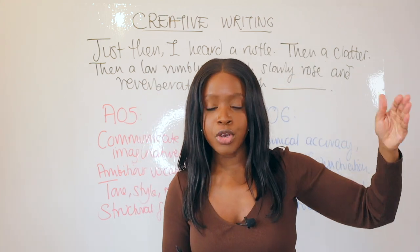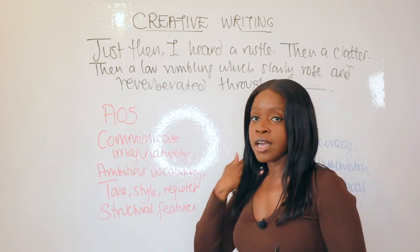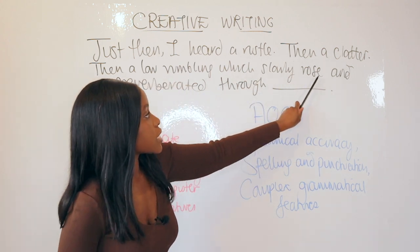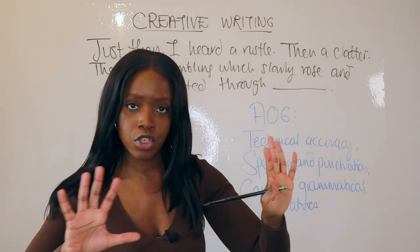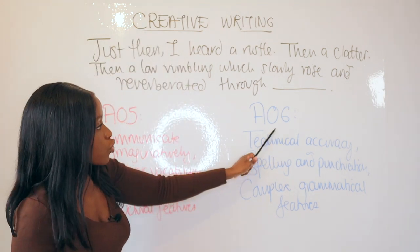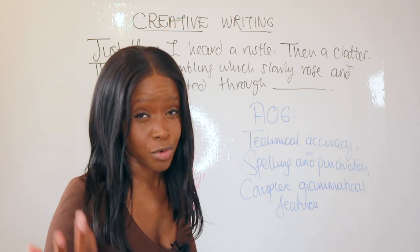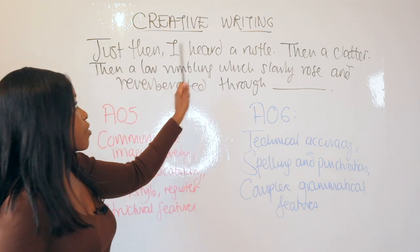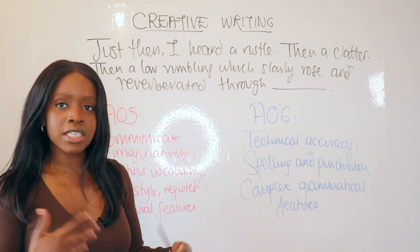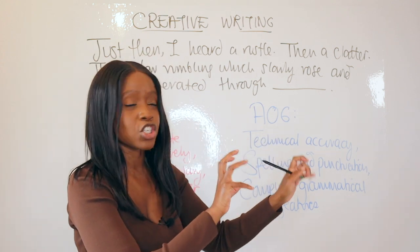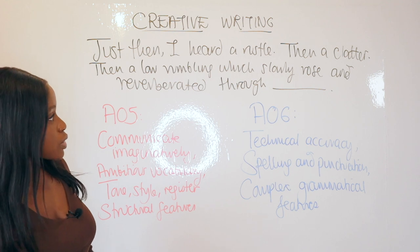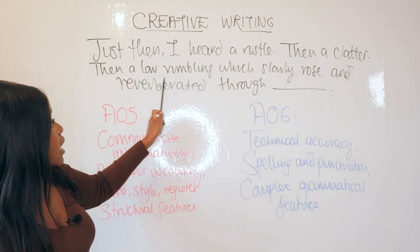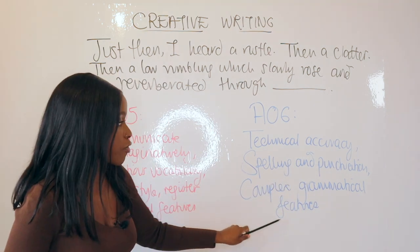In terms of structural features, this sentence starter has lots of powerful ones: a short simple sentence — 'then a clatter' — followed by a long complex sentence. It's a really nice mix. Don't forget you also need to hit AO6, which is 20% of the overall marks available for creative writing. In AO6 you need to demonstrate technical accuracy — correct spelling and punctuation — and use complex grammatical features, which this phrase does by mixing short simple sentences with a long complex sentence.